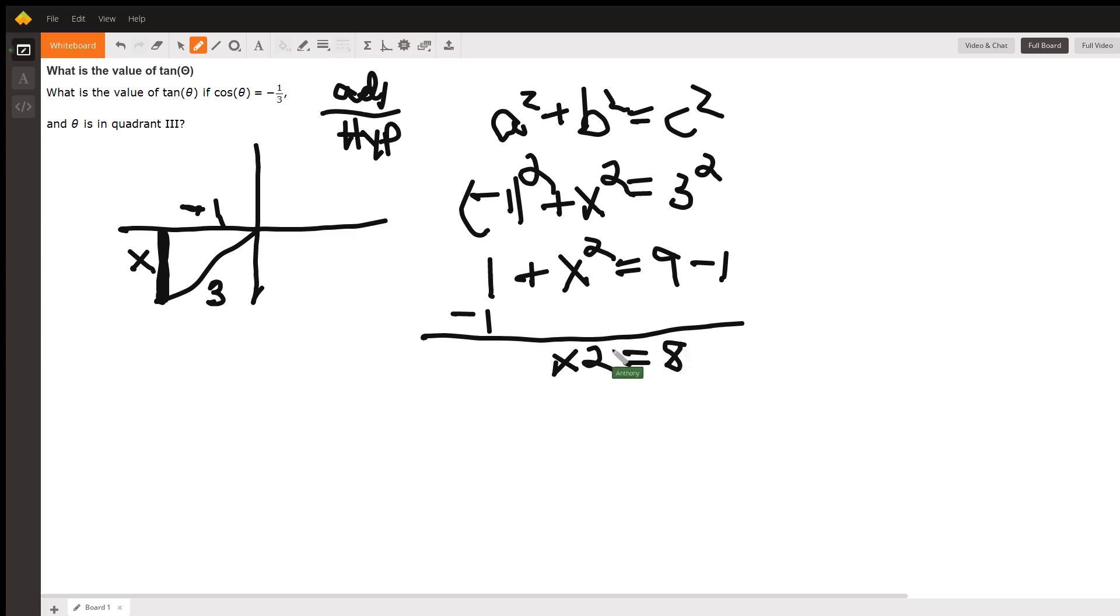And if I take the square root of both sides, then I've got that x is going to equal plus or minus the square root of eight. And that's what x is going to be here.